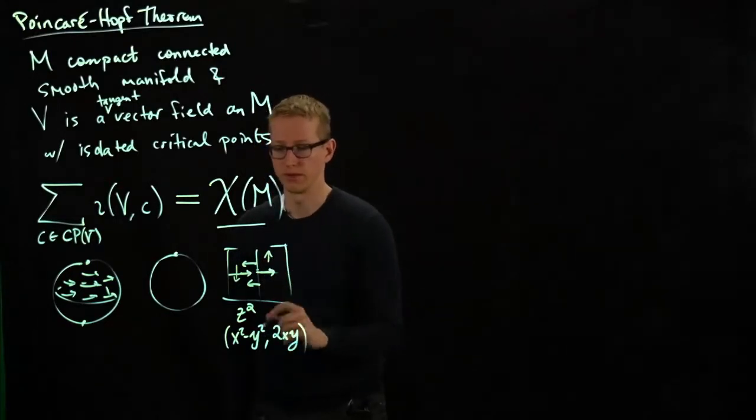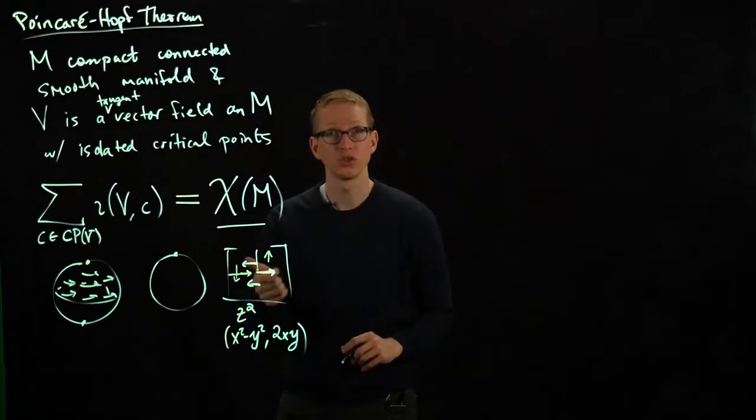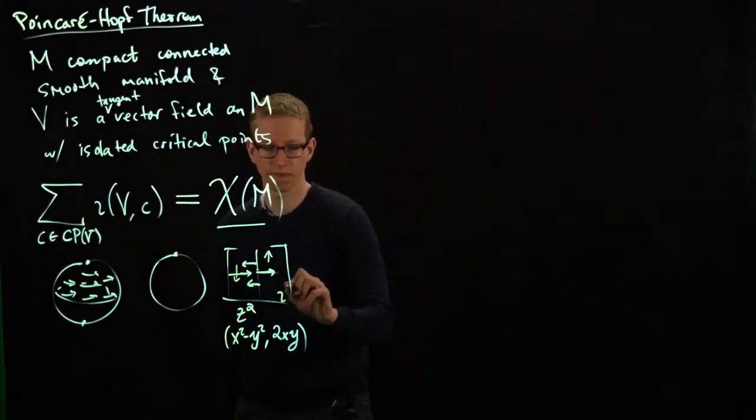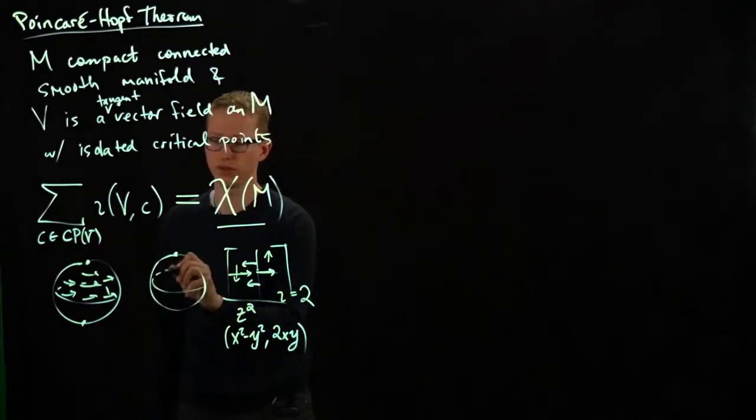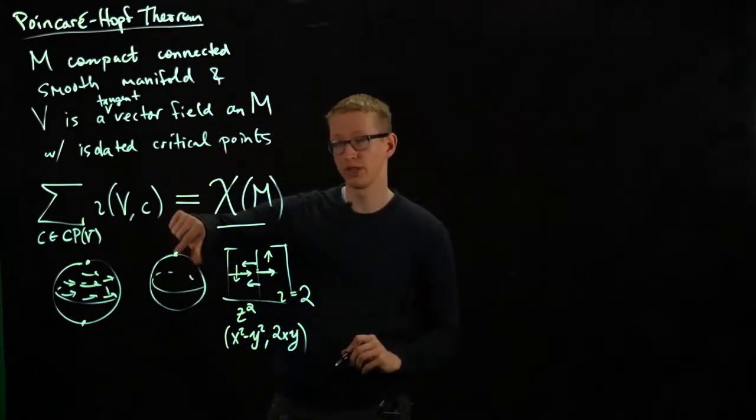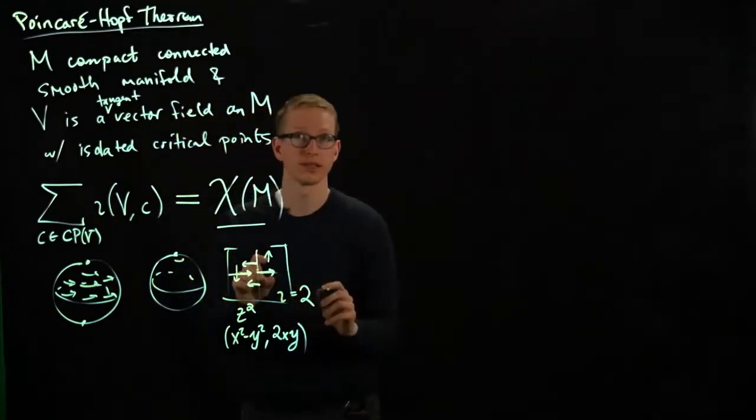so you can see that there's a lot of twisting going on, and it's hard for me to draw this. But this vector field actually has index 2, so I can draw something like that on the sphere as well, a vector field that has index 2. I'm not going to try to draw it, but locally it looks like this picture.